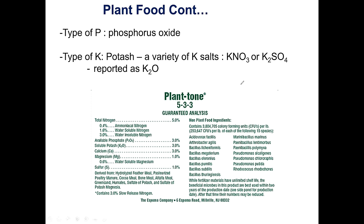In a fertilizer label, the NPK ratio — for example 5-3-3 — tells you the total nitrogen is 5%, with a breakdown of different nitrogen sources; the available phosphate is 3%, reported as P₂O₅; and potash is reported as potassium oxide. There may also be secondary nutrients such as calcium, magnesium, and sulfur. In lab, your TA will have the NPK ratio for whatever fertilizer you're using.